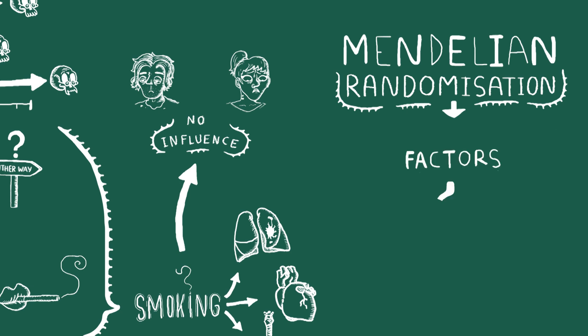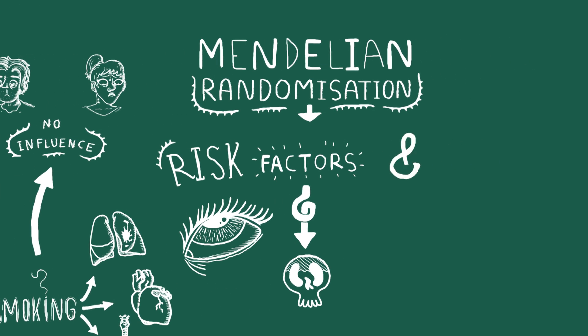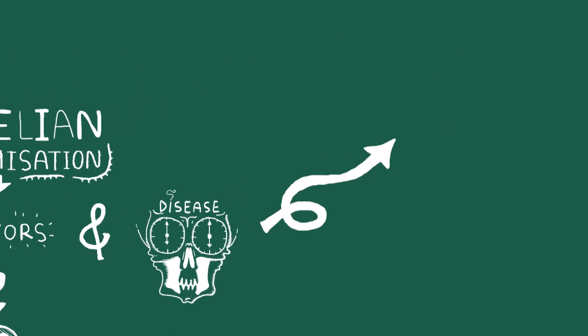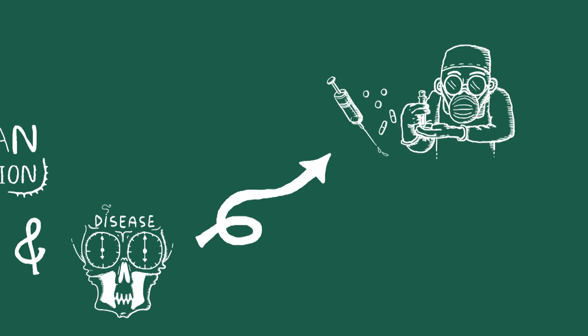Mendelian randomisation has already begun to tell us about factors that influence our risk of disease. Now we're using the same approach and other ways to look at several risk factors together and to look at what influences disease progression, which may help us to develop new treatments.